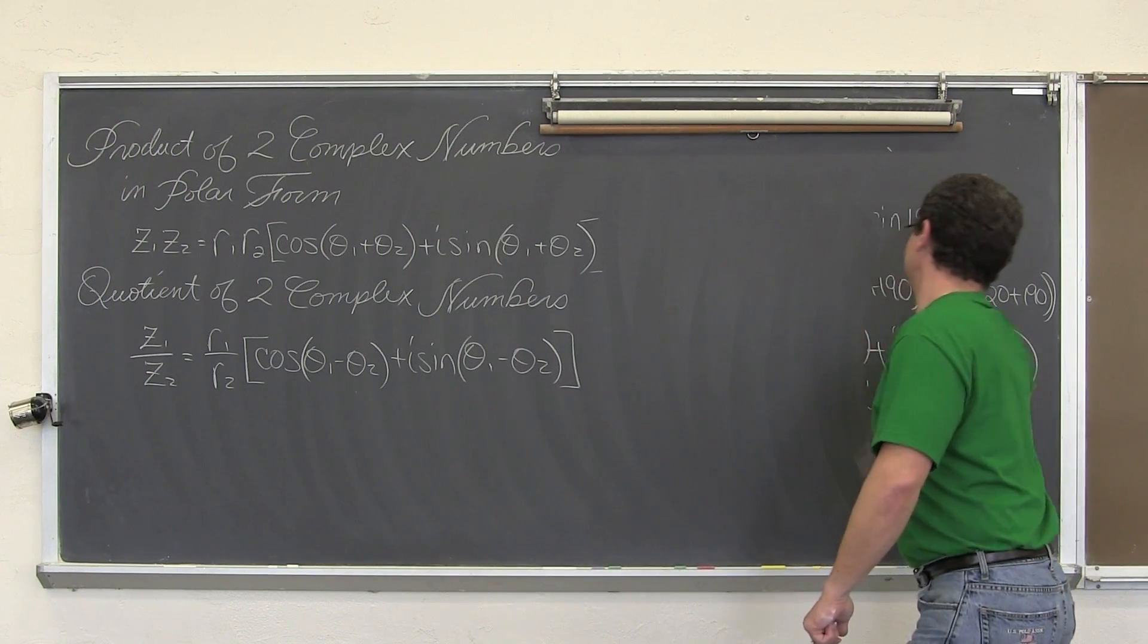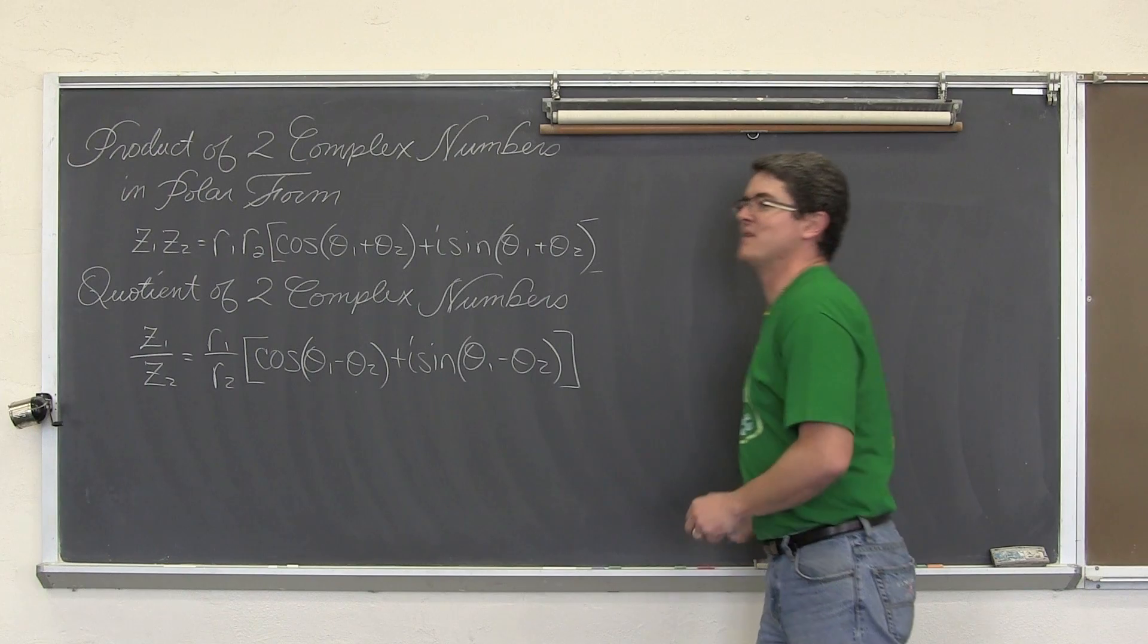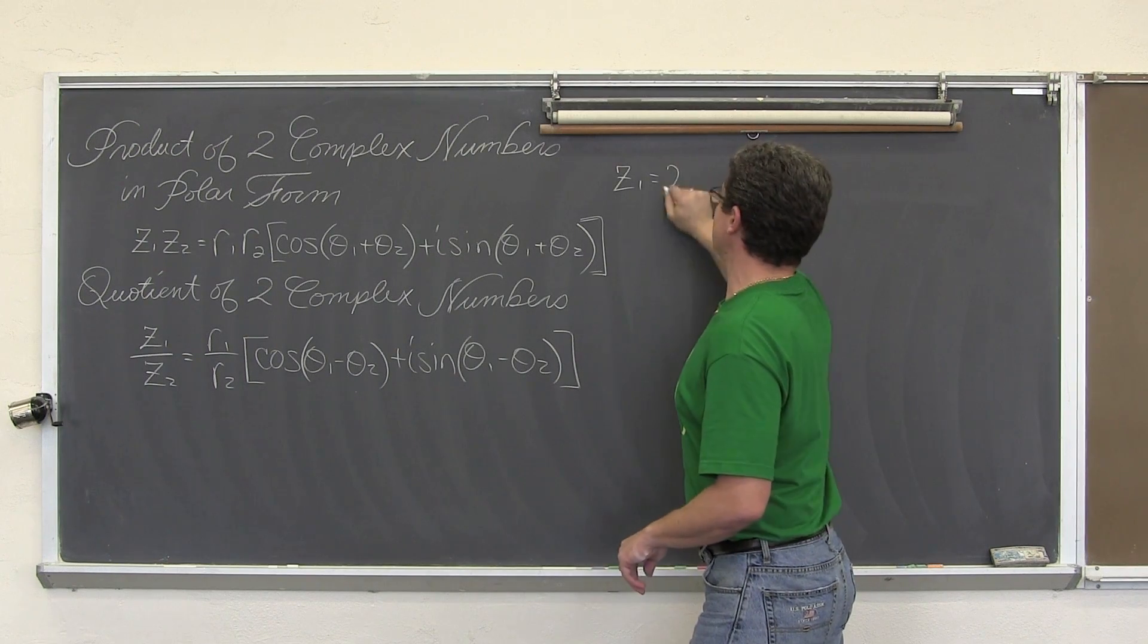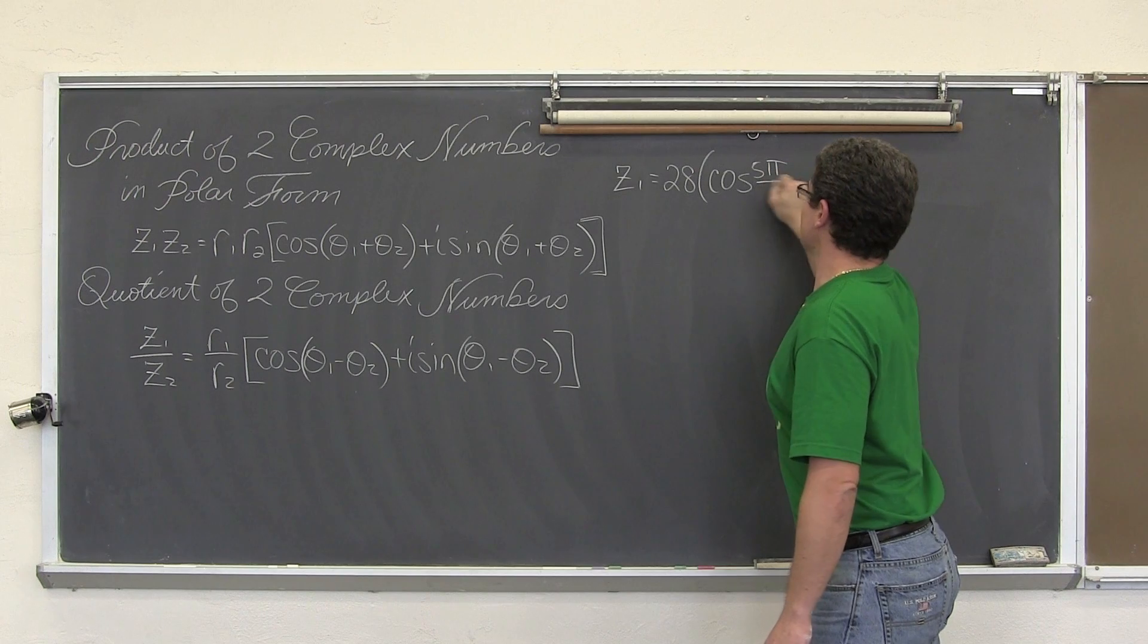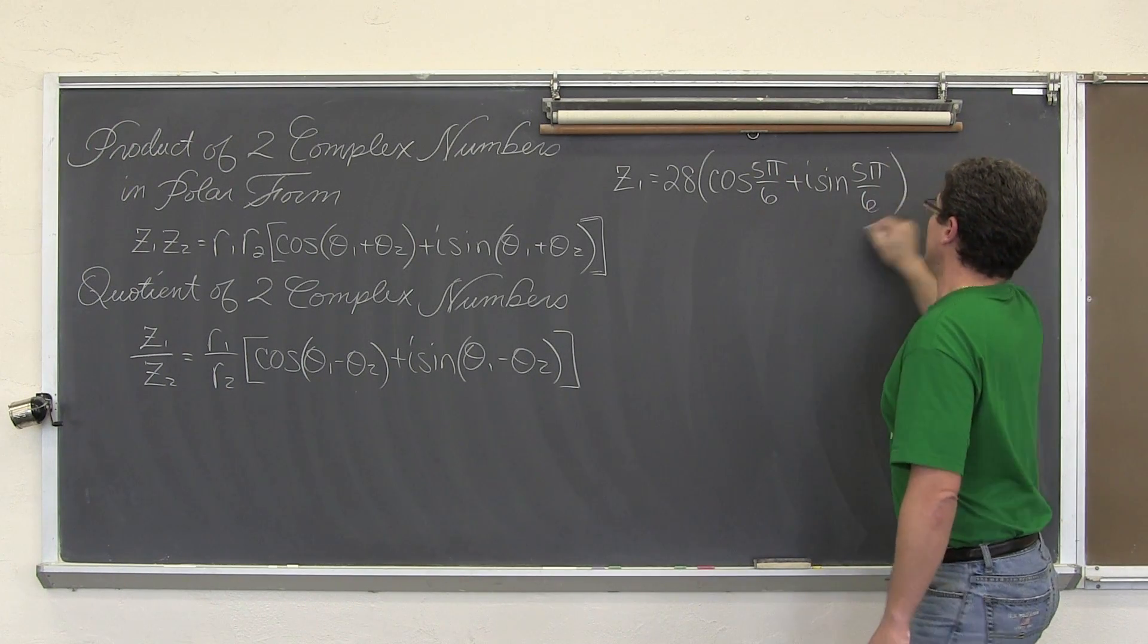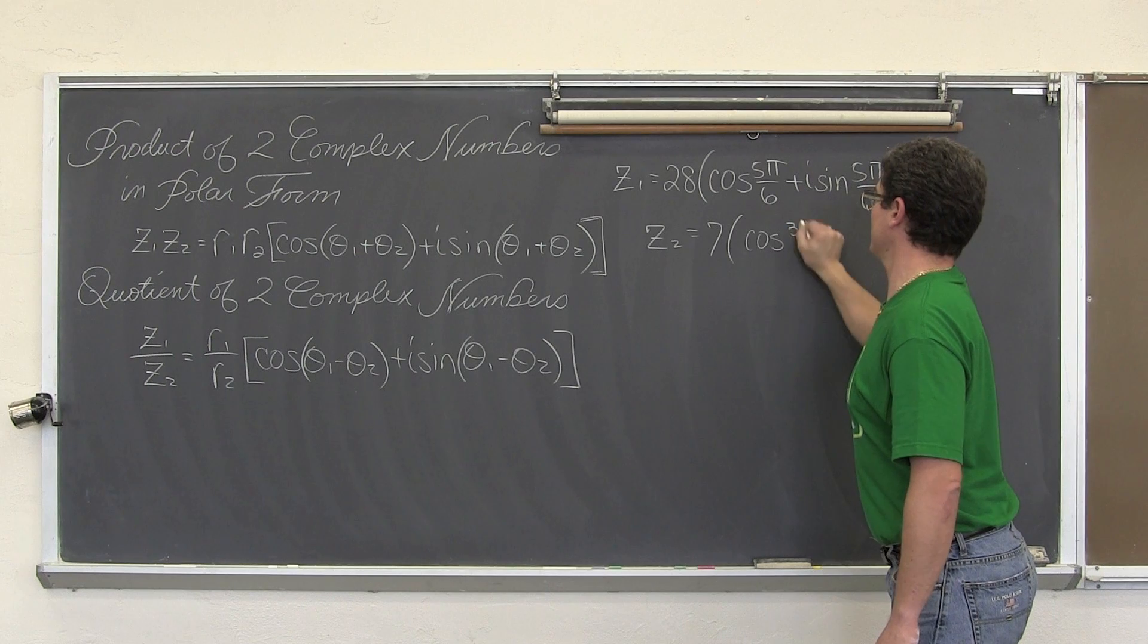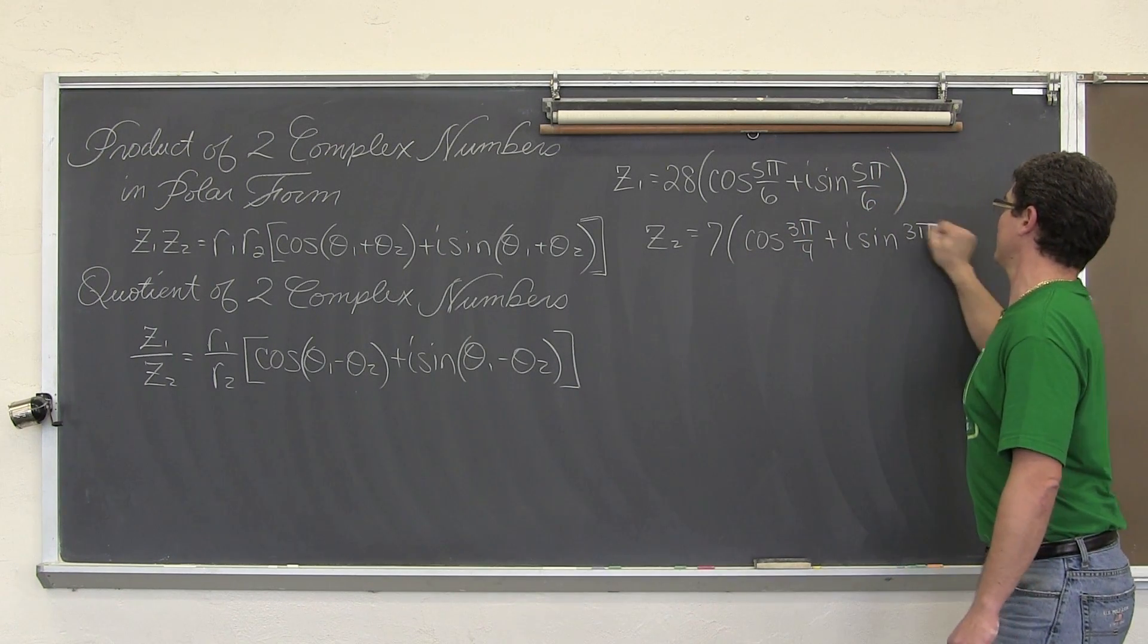Let's do a quotient and cut this video off before we really start doing some bad songs. z₁ equals 28 times the quantity cosine 5π/6 plus i sine 5π/6. And z₂ equals 7 times the quantity cosine 3π/4 plus i sine 3π/4.